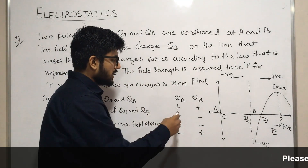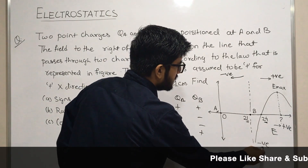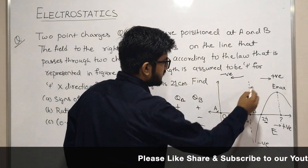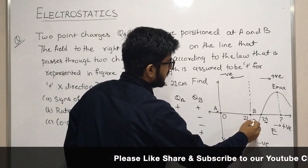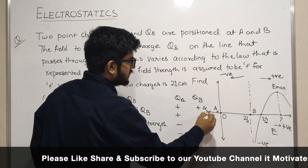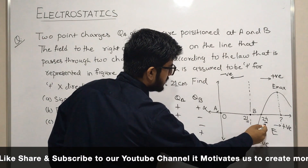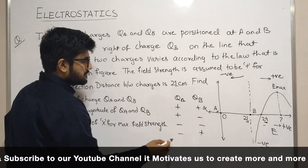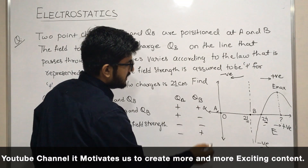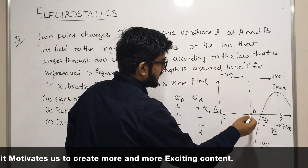The possible combinations are: qa positive and qb positive; qa positive and qb negative; qa negative and qb negative; qa negative and qb positive. Now let's analyze each. If qa is positive and qb is positive, the electric field cannot be negative in the region shown, so this possibility is cancelled because the electric field at x=24 is negative.